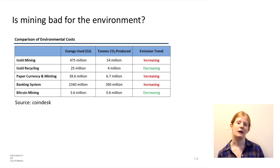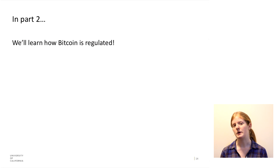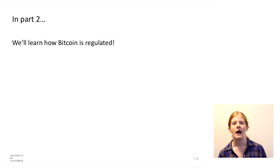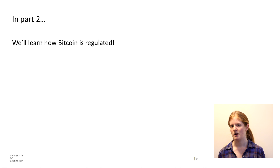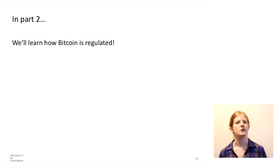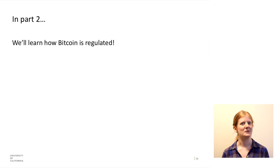So in part two, we're going to learn about how Bitcoin is regulated — and by regulated, I mean how people in the community govern it, because as I said there's no central authority that manages Bitcoin. I want to talk about the social norms around Bitcoin. I will see you for part two.